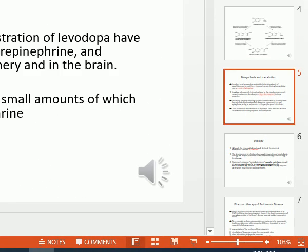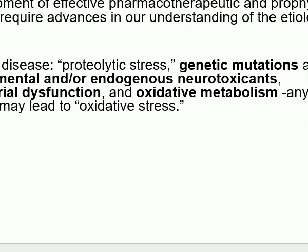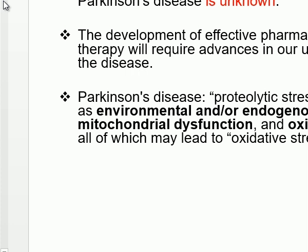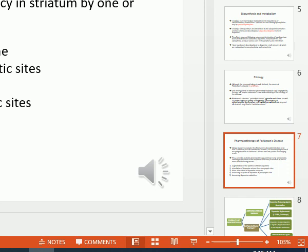Dopamine is synthesized from tyrosine — tyrosine is hydroxylated by tyrosine hydroxylase to get levodopa, and levodopa is decarboxylated to get dopamine as a neurotransmitter. The etiology of the disease is unknown, but is sometimes related to proteolytic stress, genetic mutation, environmental or endogenous neurotoxins, mitochondrial dysfunction, and oxidative metabolism. For this reason, patients are advised to take antioxidant vitamin E in order to slow the progression of neurodegeneration in Parkinson's disease.